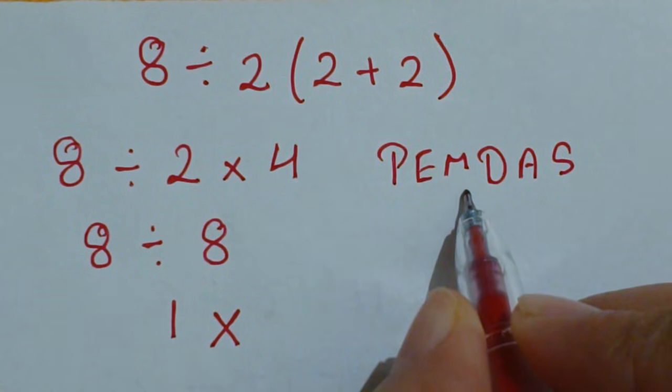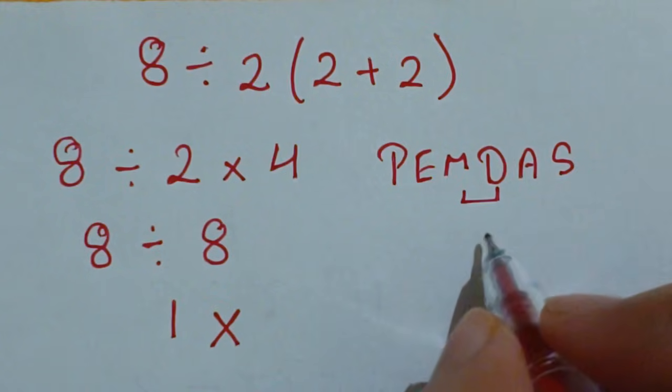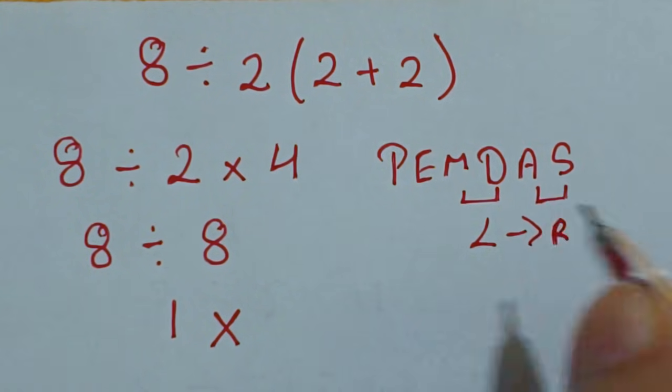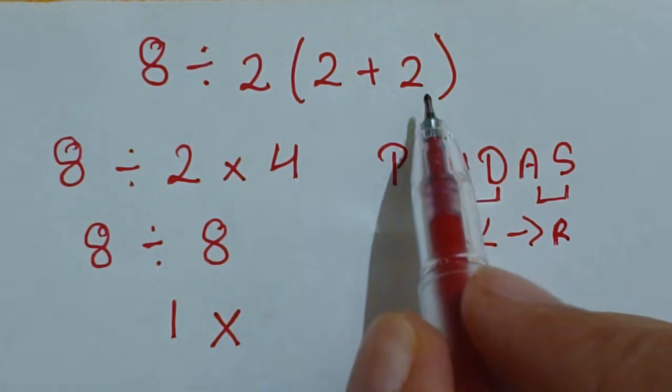In this, you have to remember that multiplication and division both have equal priorities, therefore go from left to right. Same for addition and subtraction. So here, first we'll solve this parenthesis part.